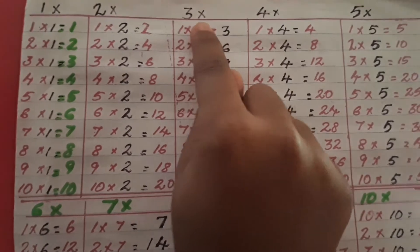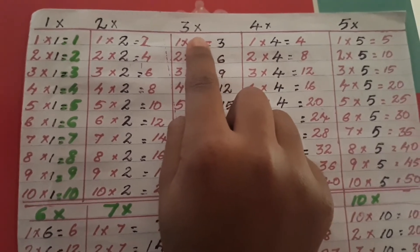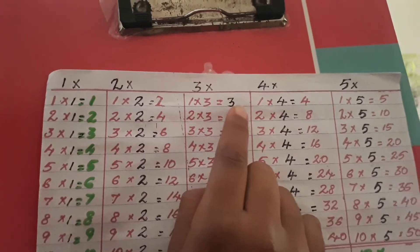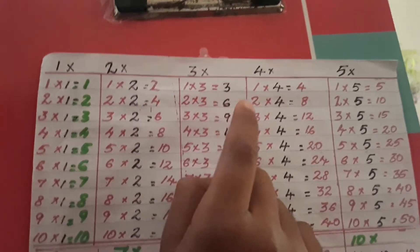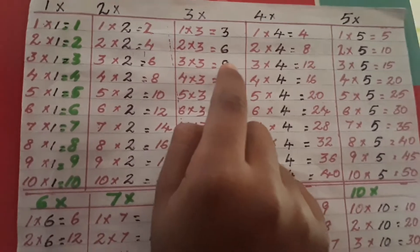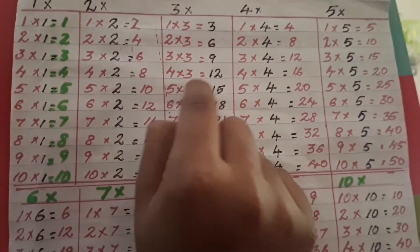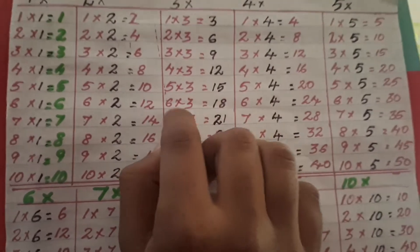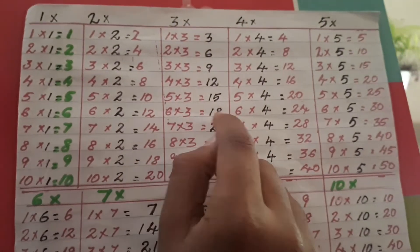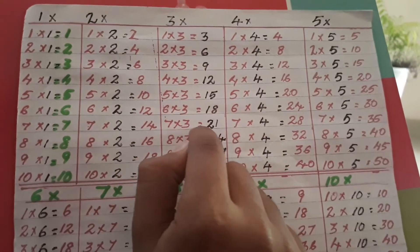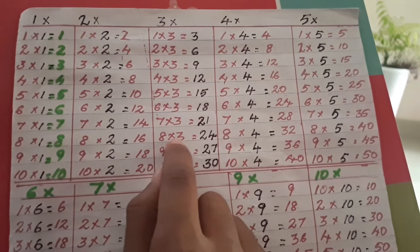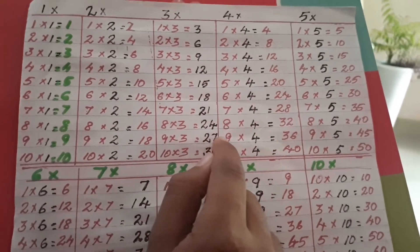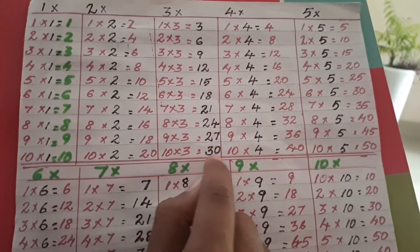Now, let's see table of 3. 1 three is 3. 2 twos are 6. 3 twos are 9. 4 twos are 12. 5 twos are 15. 6 twos are 18. 7 twos are 21. 8 twos are 24. 9 twos are 27. 10 twos are 30.